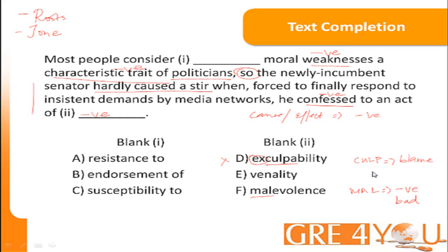Malevolence is a tempting choice because we are looking for a negative word — he confessed to an act of malevolence. But let's look more closely at the meaning: malevolence means ill will, wanting to hurt somebody, being cruel or unkind. So even though it's a negative word, it doesn't exactly fit the meaning of this sentence because nothing in the sentence tells us that he was cruel or unkind.